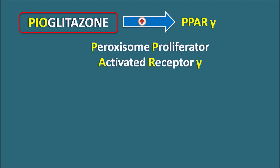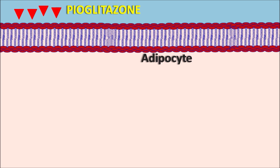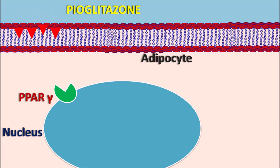Pioglitazone acts by stimulating a nuclear receptor called PPAR-gamma — peroxisome proliferator-activated receptor gamma. These nuclear receptors are found on a variety of cells, mainly adipose tissue, muscle, and liver. Pioglitazone enters the adipocytes and binds to PPAR-gamma receptors expressed on the nucleus, stimulating gene transcription and protein synthesis.